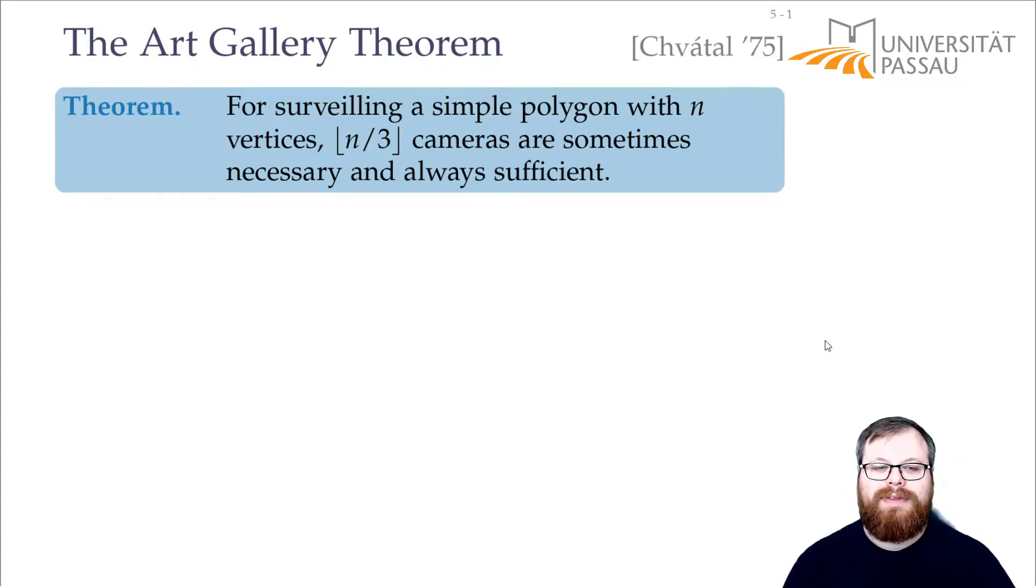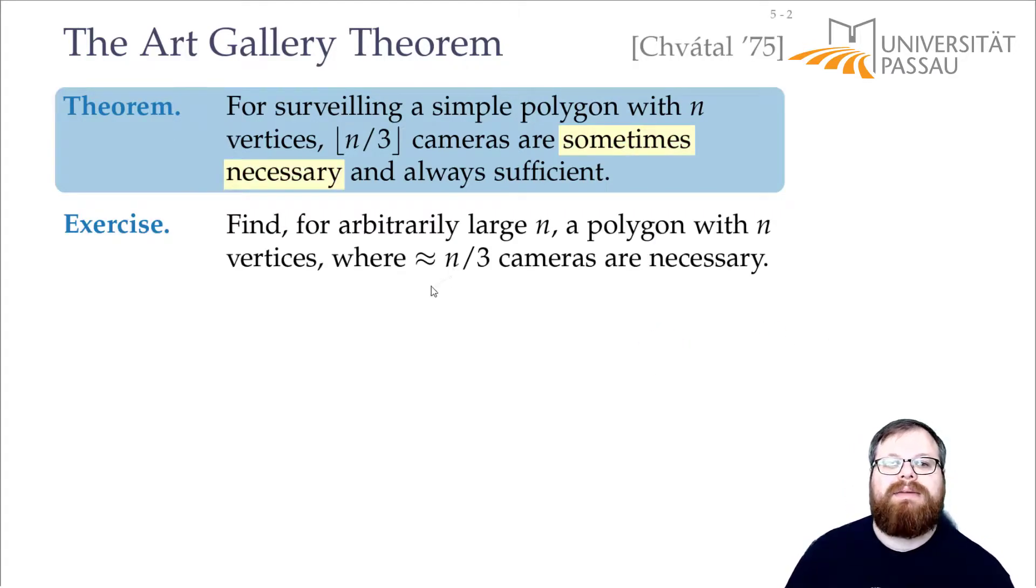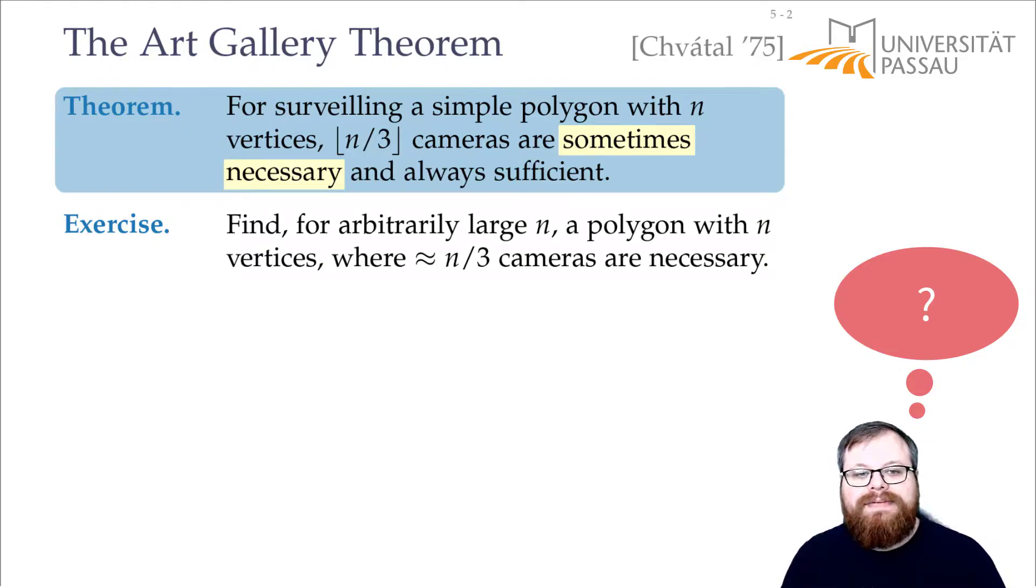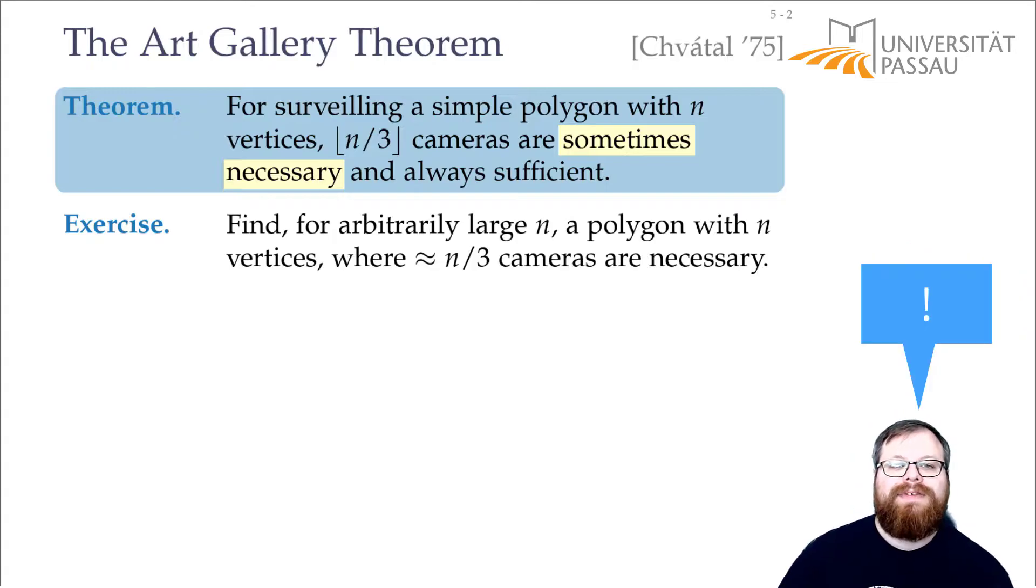And now we want to prove this theorem. The first part is sometimes necessary. So now you can start thinking about it. If you have some large n, can you find a polygon with exactly n vertices where you need about n over 3 cameras? If it's a few more, that's fine, but it should be n over 3 plus a constant number. Could you find a polygon?